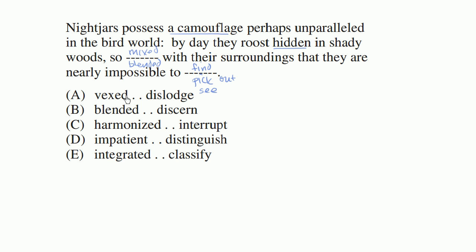This first choice, so vexed with their surroundings that they are nearly impossible to dislodge. To be vexed with your surroundings, that's kind of angry or annoyed or worried or frustrated with your surroundings. That doesn't make a lot of sense that the birds would be that way regarding their surroundings. This is already starting to feel weird. So vexed with their surroundings that they are nearly impossible to dislodge means they're so stuck into their surroundings that you can't even pull them out if you wanted to. So this one is feeling very wrong.